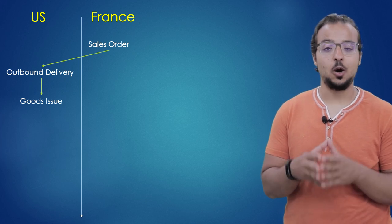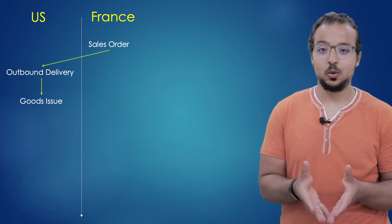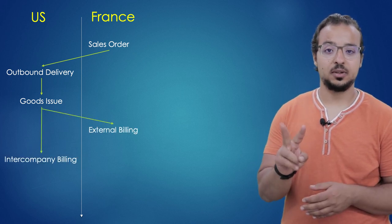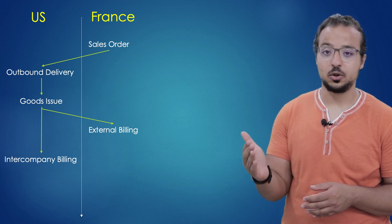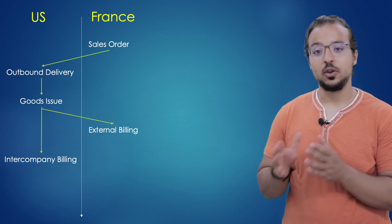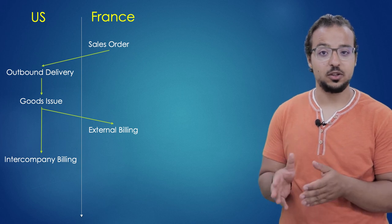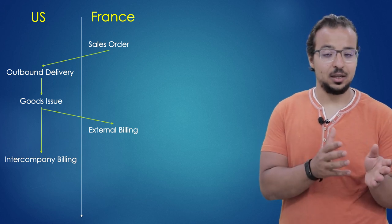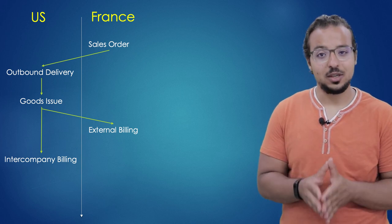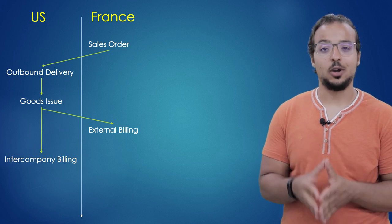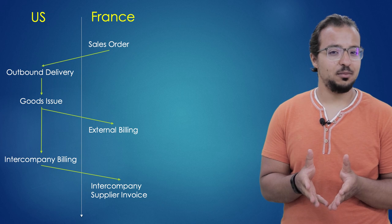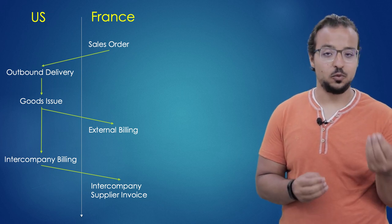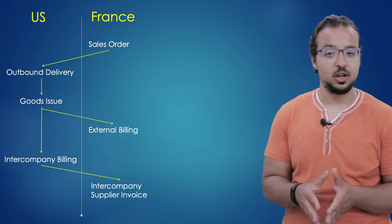Based on this sales order, we are going to create an outbound delivery in our company in the US. Based on the outbound delivery, we create a goods issue also in the US, and then we move to billing. In this process we have two billing documents: one between our company in France and the external customer, created in the French company, and another billing document between the US company and the France company — this is the intercompany billing document, created in the US company since it is selling the product in the background to France. Based on this billing document, we move to the next step: posting the supplier invoice. Our company in France is buying a product from the US company, so we also have to create an intercompany supplier invoice in our company in France.